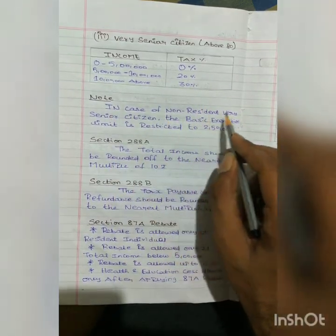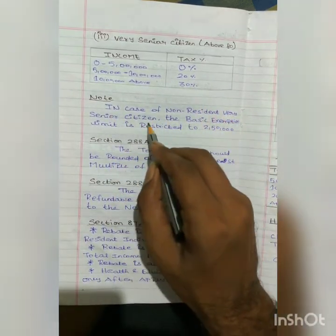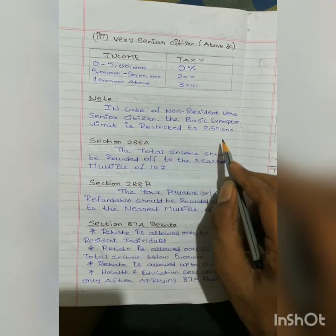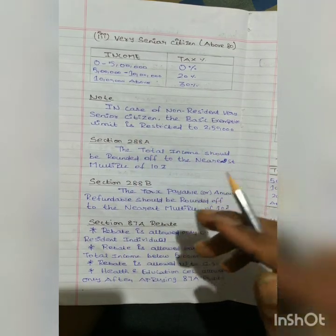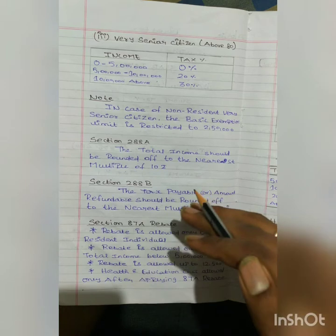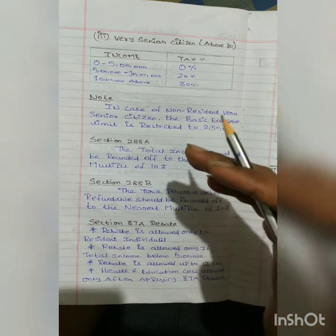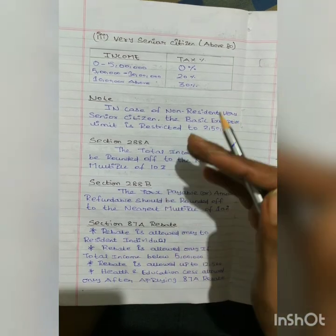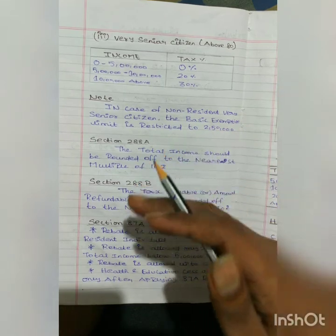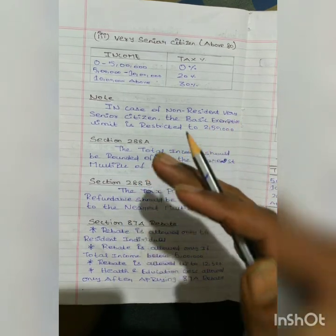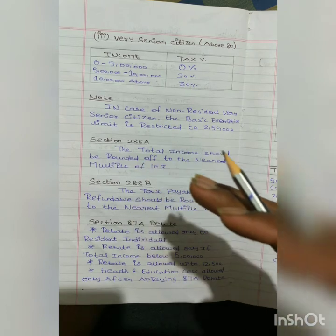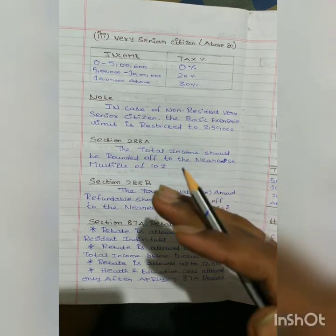Note: in case of a non-resident very senior citizen, the basic exemption limit is restricted to 2.5 lakhs. In simple terms, for any non-resident, irrespective of age, the basic exemption limit is 2.5 lakhs.